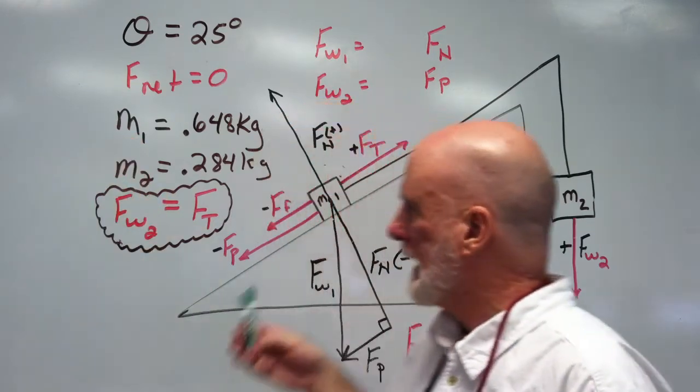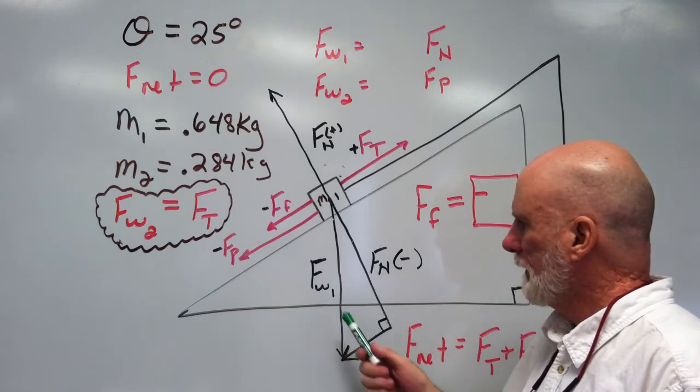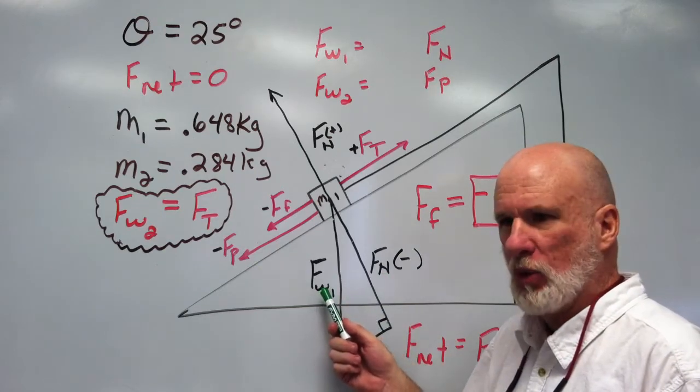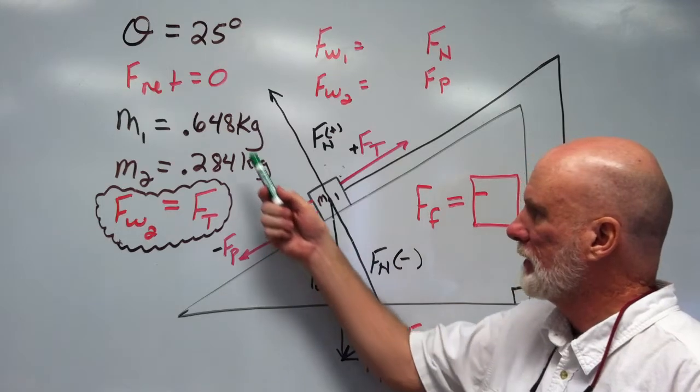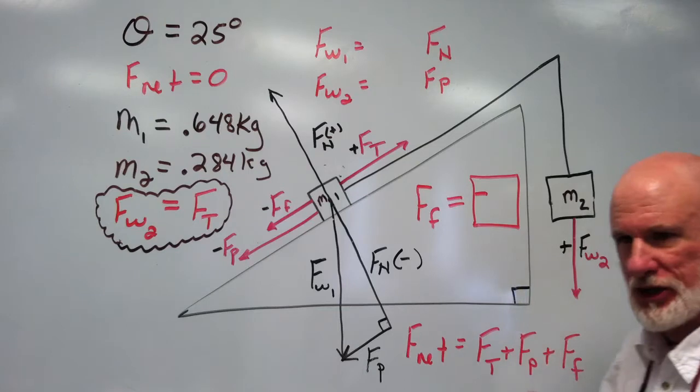Okay, I have, I can calculate the Fn and the Fw1, which is based on mass one. And then Fw2, which is mass two.